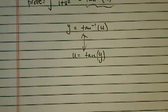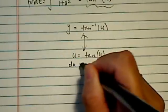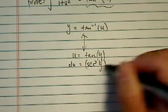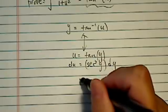I don't know how someone came up with this one, but du then equals secant squared of y, dy. So far, it's pretty innocent.